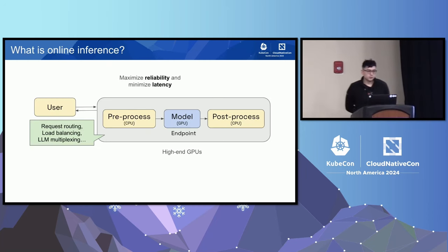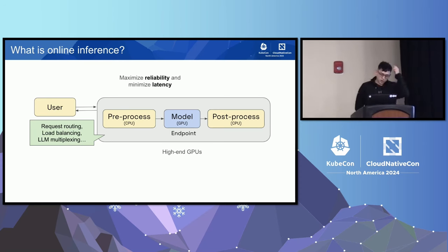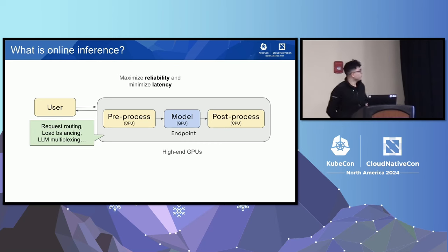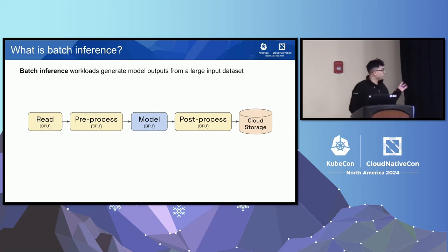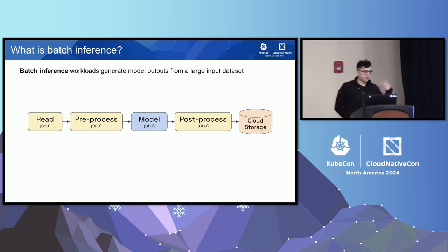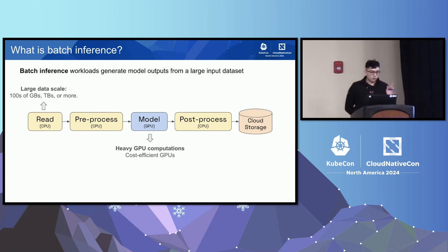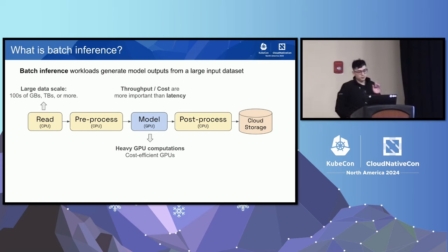Online inference refers to generating output tokens or predictions from a machine learning model in real time. Common examples include LLMs like ChatGPT, Gemini, Llama, and Claude. Offline inference, or batch inference, involves generating predictions using larger inputs in a periodic manner, and the output is often persisted somewhere for reference later. With batch inference we care more about throughput and cost, whereas with online inference we care a lot about latency.